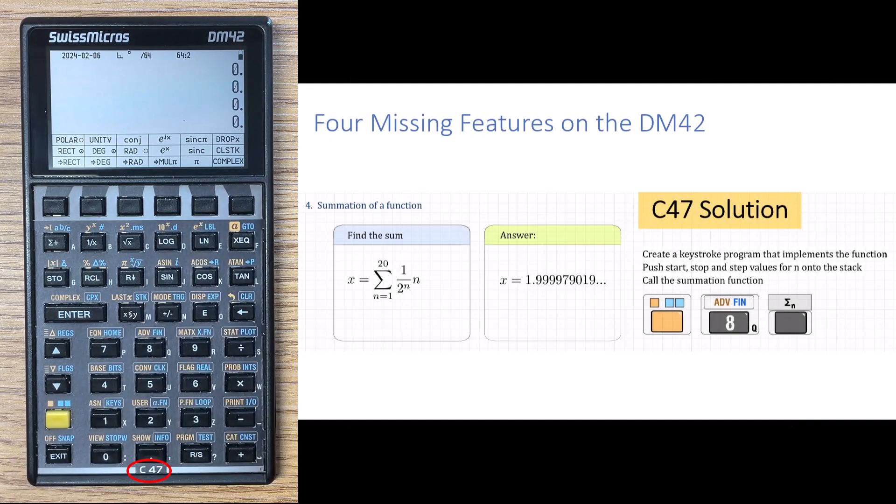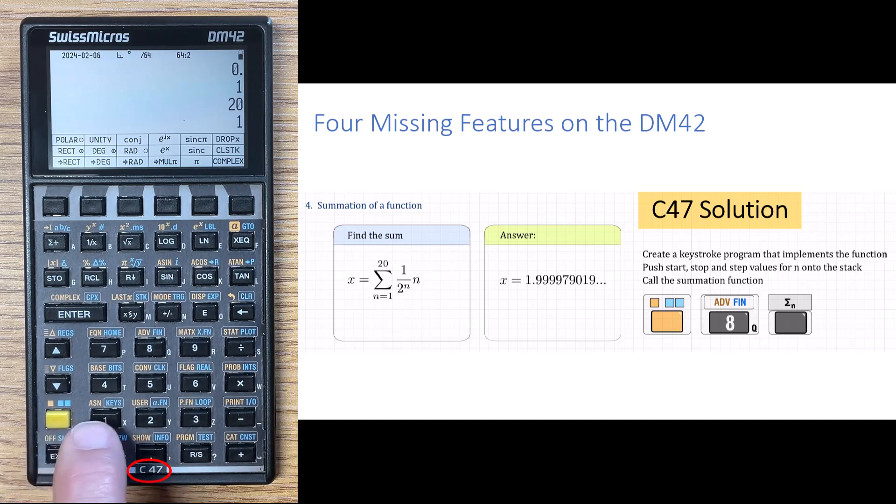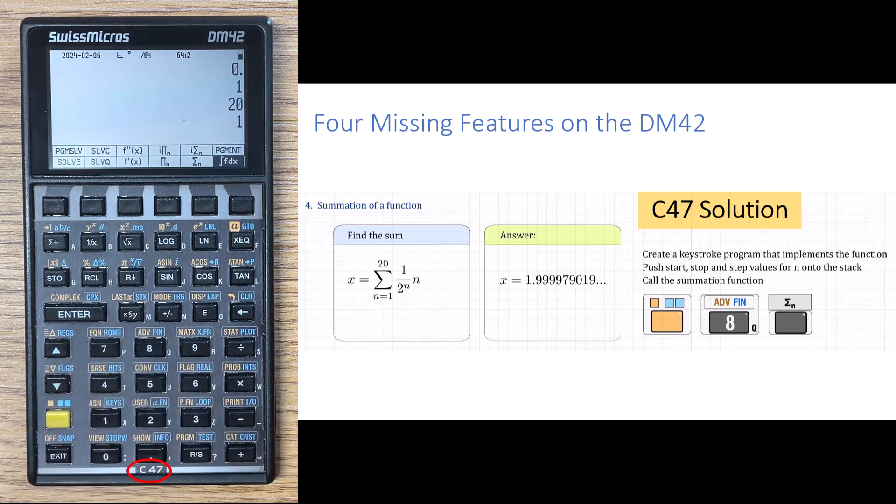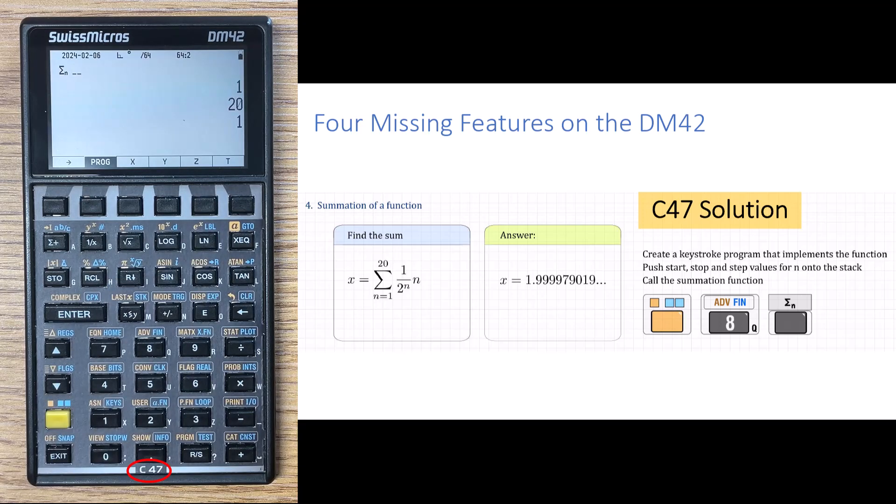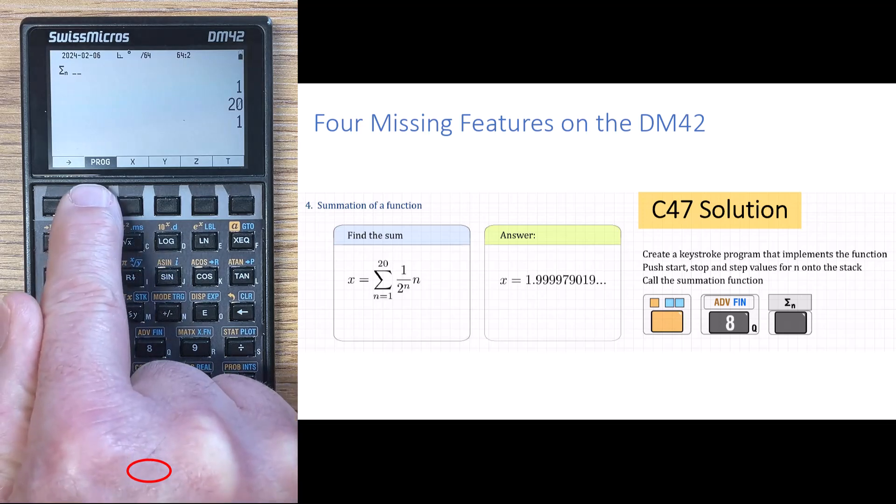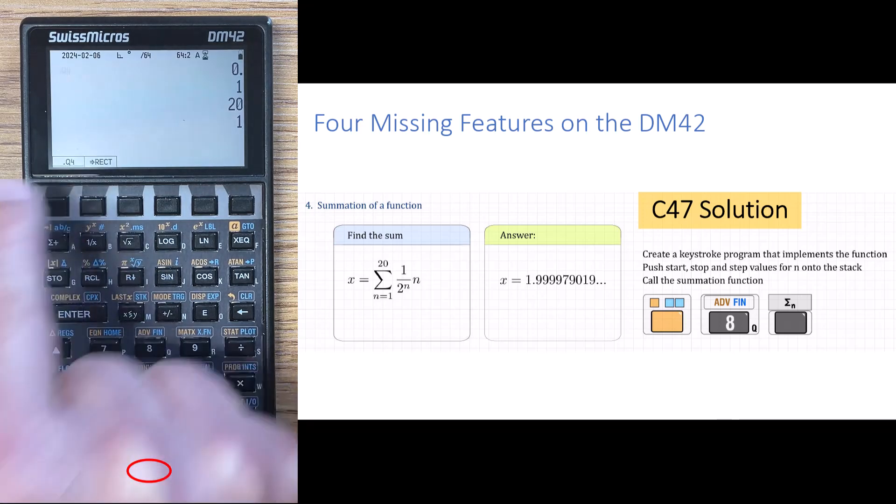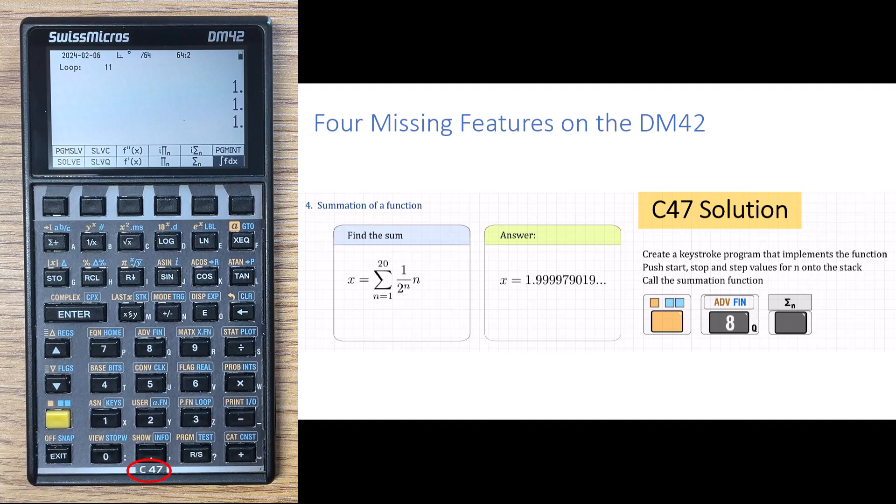So now let's clear the stack and let's find the summation. Let's now do the problem. So we push the start, stop and step values onto the stack. So I want a start value of one, a stop value of 20 and a step value of one for the summation. And then we go to the summation, which is under the advanced key. So we go to advance and summation of N is right here. And it says, which program do you want me to sum from one to 20 with a step of one? And I say program and I select Q4 and it loops through all the iterations and gives us the answer.